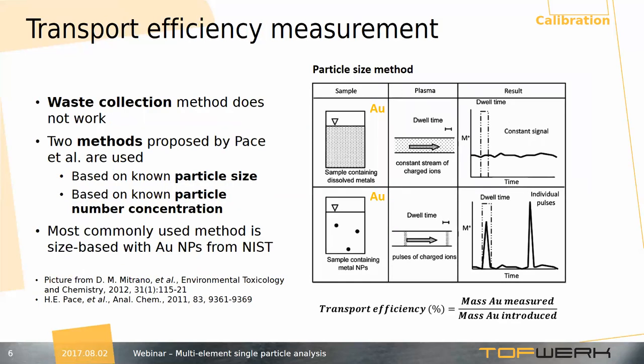The problem with this approach is that we don't know how much of our solution is being introduced into the plasma, because transport efficiency of the sample introduction system is very dependent on operating conditions and has to be measured. The most straightforward way is waste collection — you weigh how much solution was introduced and how much goes into the waste and calculate the mass flux. However, this method unfortunately doesn't work and usually results in underestimation of particle sizes.